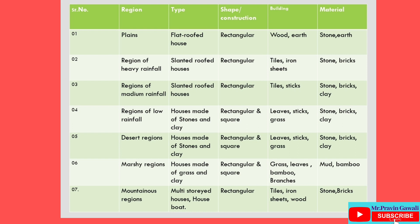Sixth region: Marshy regions. Type: houses made of grass and clay. Construction: rectangular and square. Building material for roof: grass, leaves, bamboo branches. Material for walls: mud and bamboo.